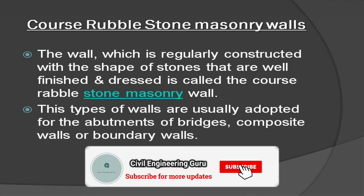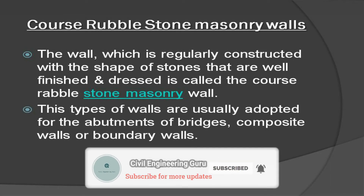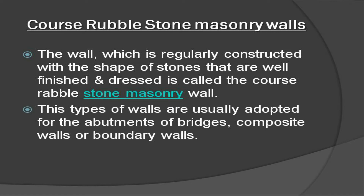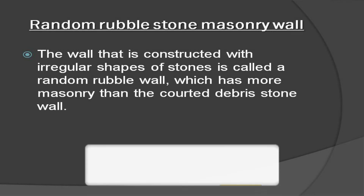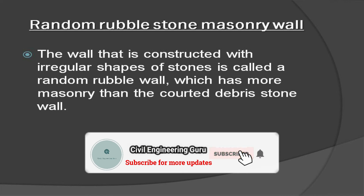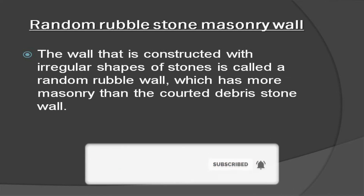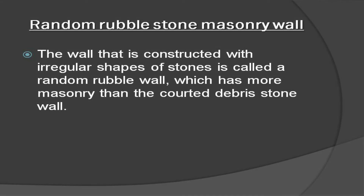Coarse rubble stone masonry walls: the wall which is regularly constructed with well-finished and dressed stones is called the coarse rubble stone masonry wall. These types of walls are usually adopted for the abutments of bridges, composite walls, or boundary walls. Random rubble stone masonry wall: the wall that is constructed with irregular shapes of stones is called a random rubble wall, which has more masonry than the coarse rubble stone wall.